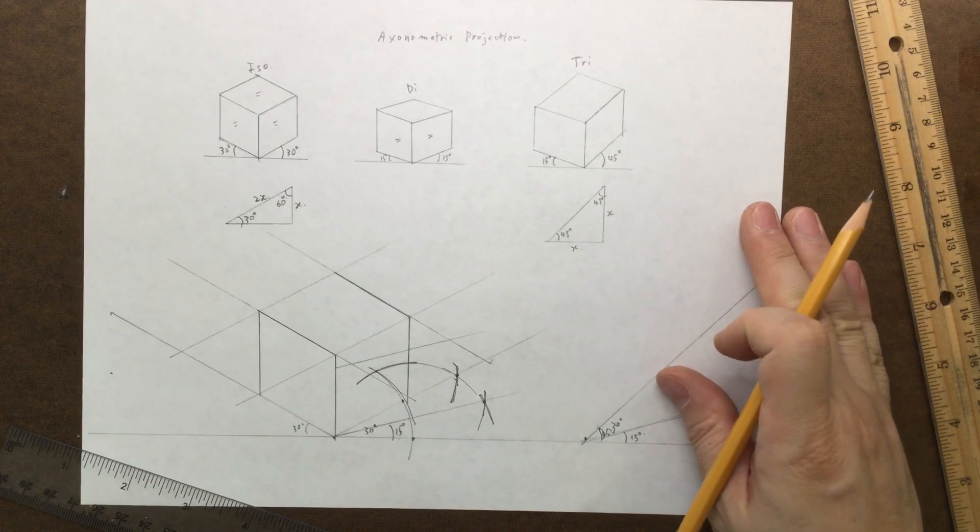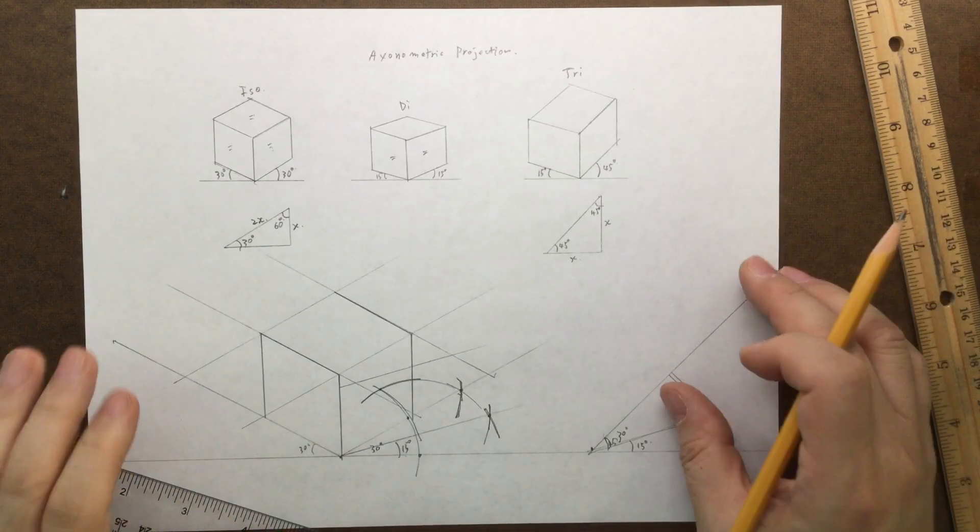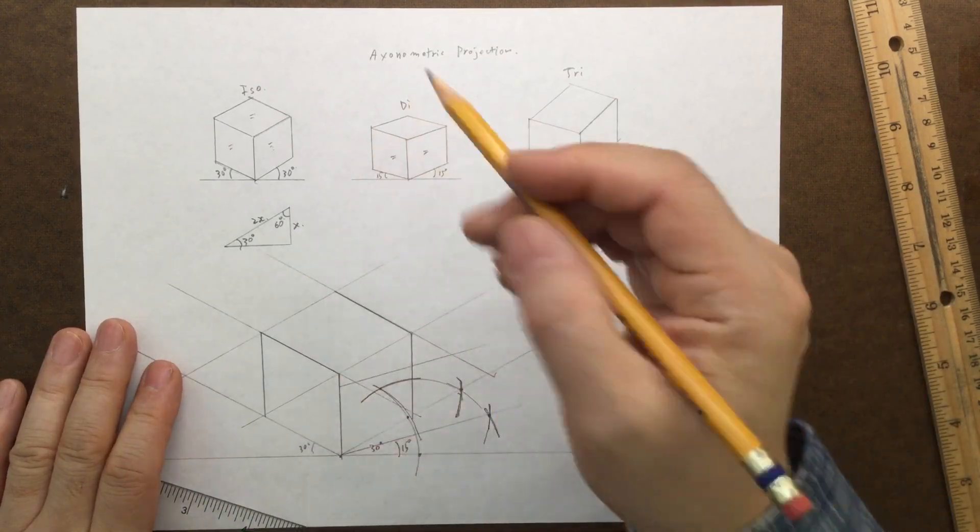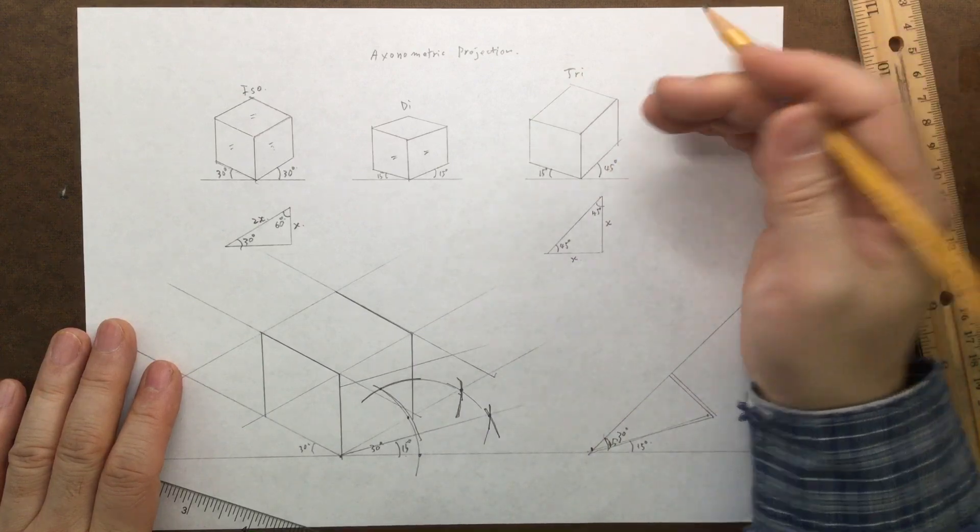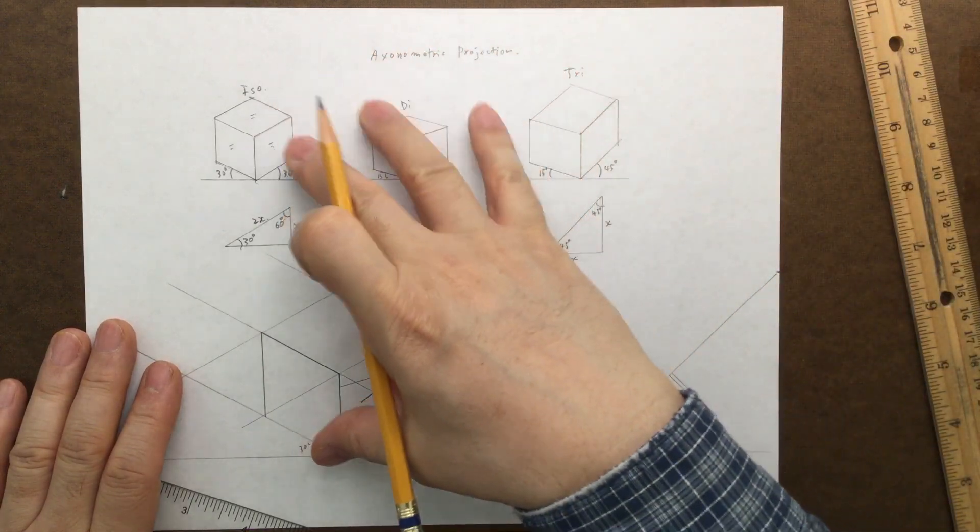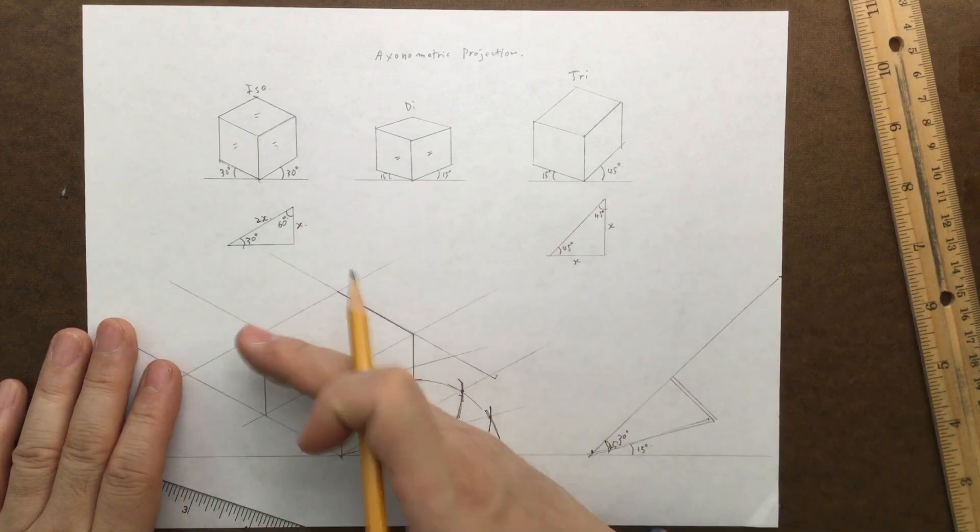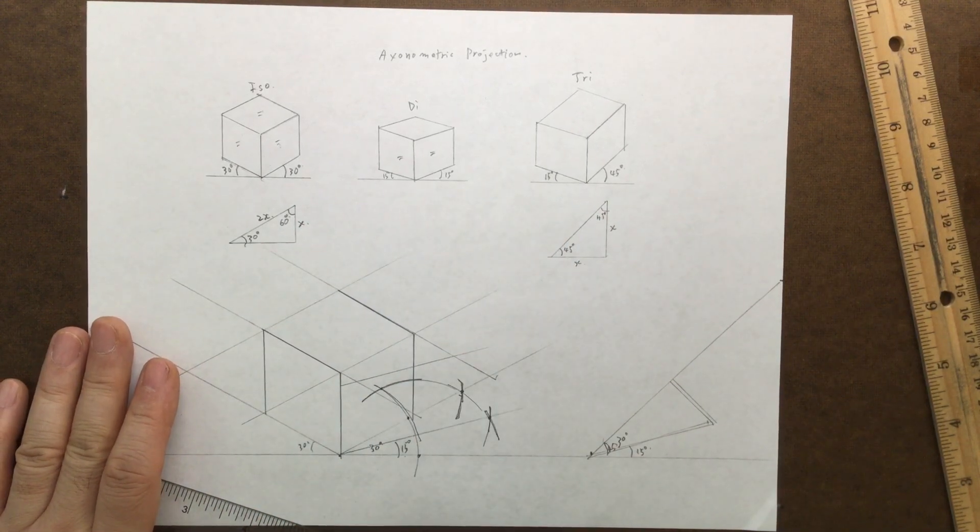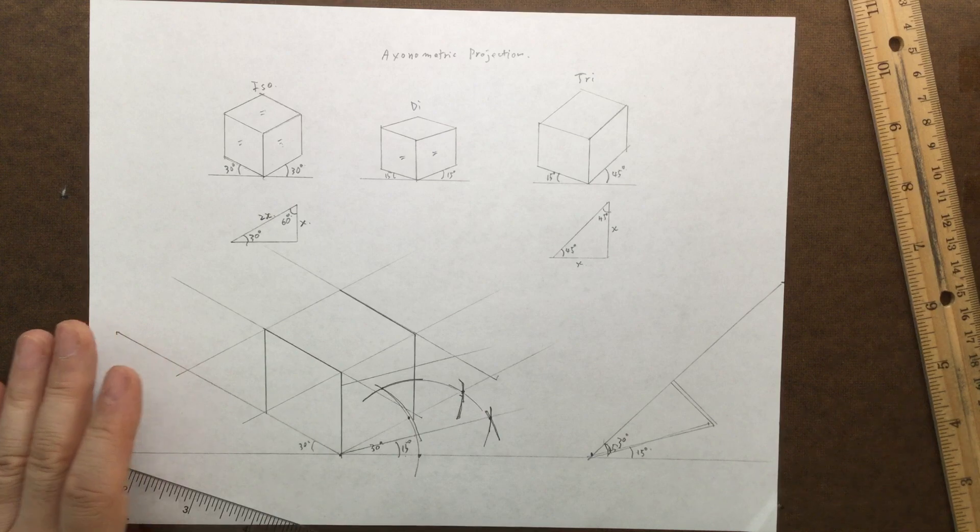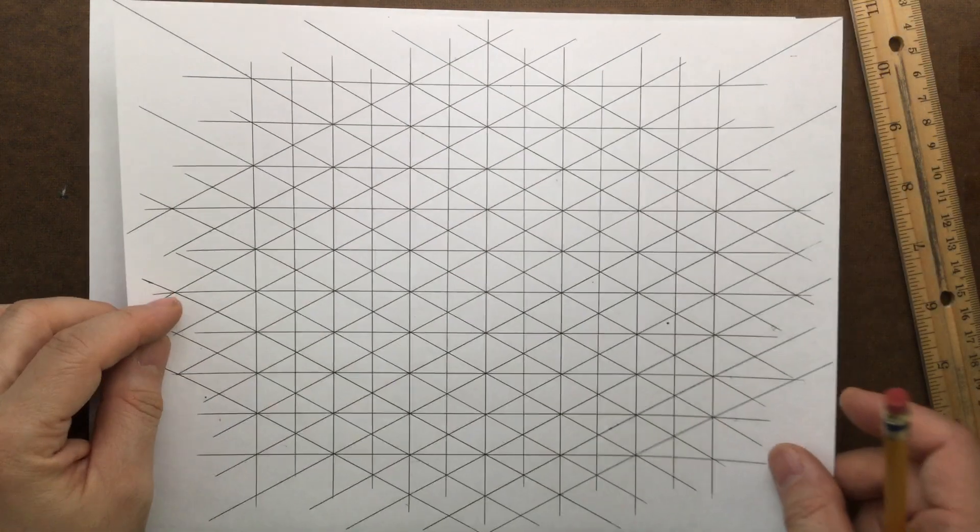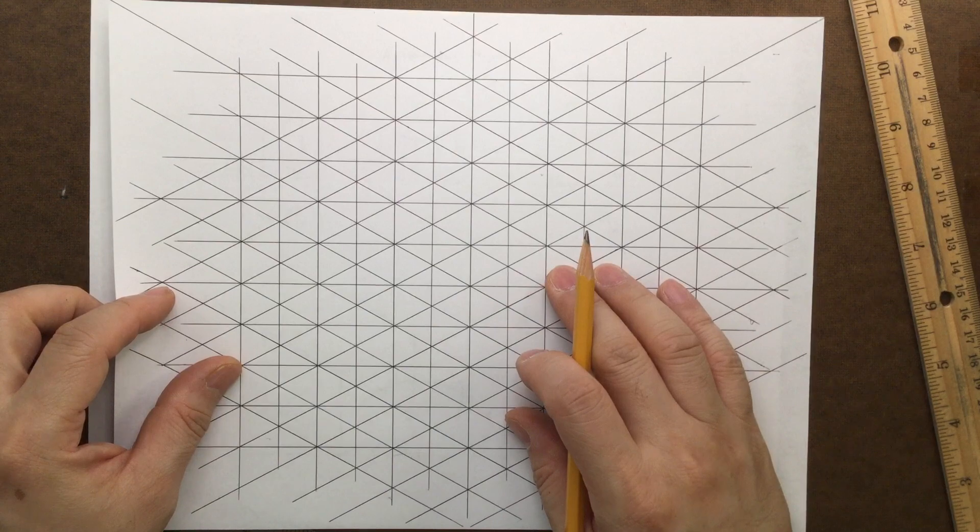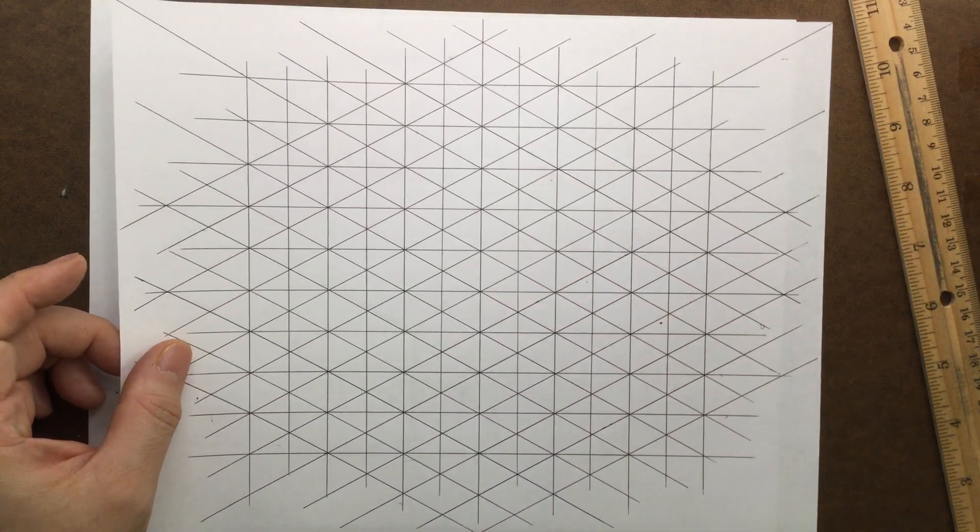So budget friendly way to find the degrees to create isometric angles, dimetric, trimetric, and creating the boxes out of it using the simple grid system. So eventually, I want everyone to create something like this so you can use it over and over again.